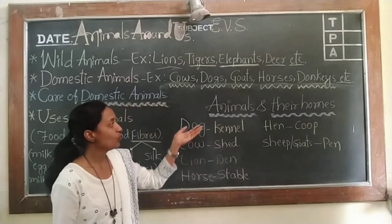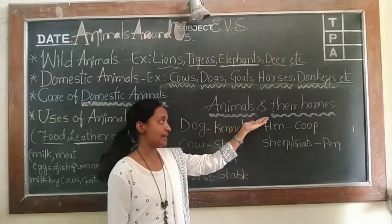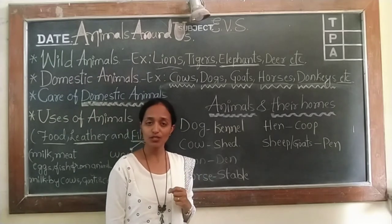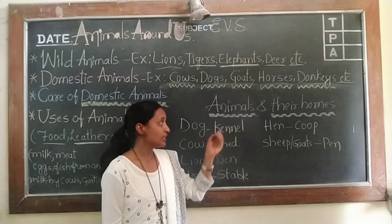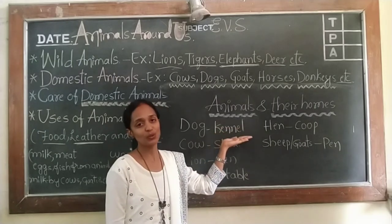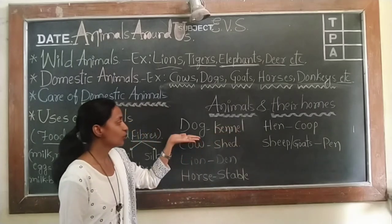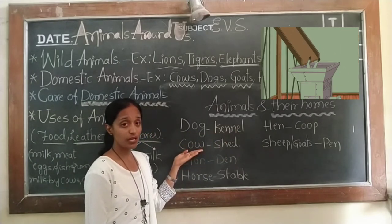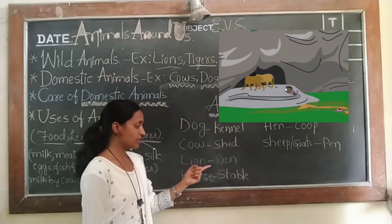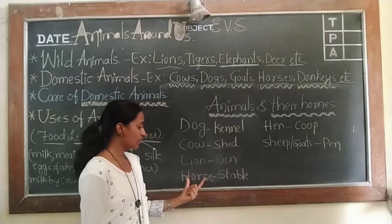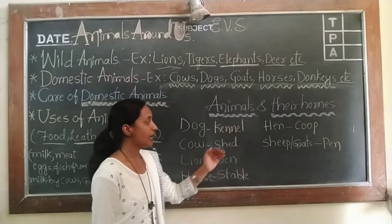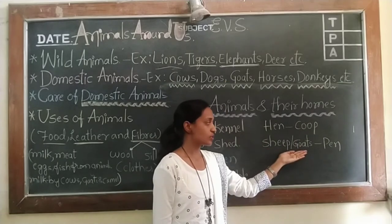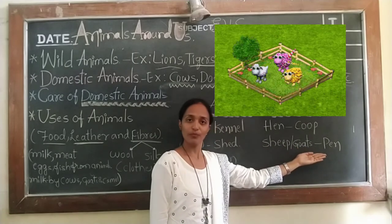Let us know about animals and their homes. Just as we need shelter to live, animals also need shelter. A dog is kept in a kennel. Cows and buffaloes are kept in a shed. A lion lives in a den. A horse is kept in a stable. A hen is kept in a coop. Sheep and goats are kept in a pen.